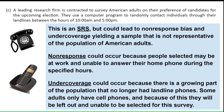Another issue would be undercoverage. Undercoverage could occur because a growing part of the population no longer has landline phones. Some adults only have a cell phone, so they'd be left out and unable to be selected for the survey. They are part of the sampling frame — adults whose opinions on the upcoming election are relevant — but if the survey only calls landline phones, there's no way for them to be included.